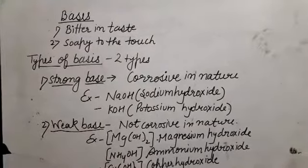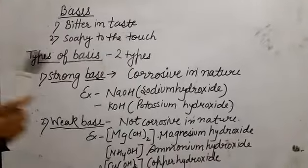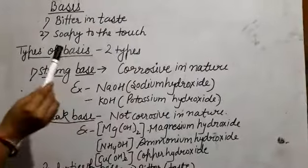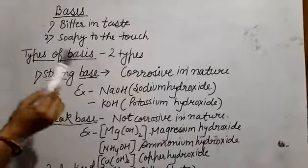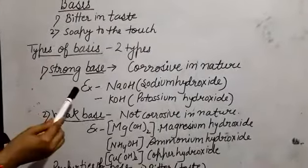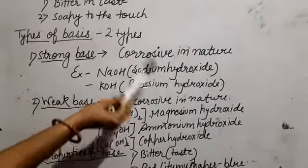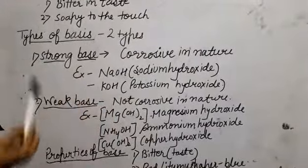Strong base is the same as acid character. First is corrosive in nature. Just like your skin will burn. So you should use it properly. This example is NaOH sodium hydroxide, second potassium hydroxide.